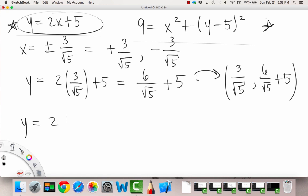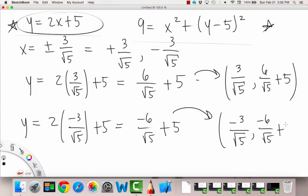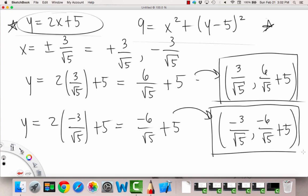Now let's plug in the other x value of negative 3 over radical 5. And then we just get that to be negative 6 over radical 5 plus 5. So this translates to, when we plugged in that negative 3 over radical 5, then we get out a negative 6 over radical 5 plus 5. So these here, this is a point of intersection between our line and circle. And this also is a point of intersection between our line and the circle.